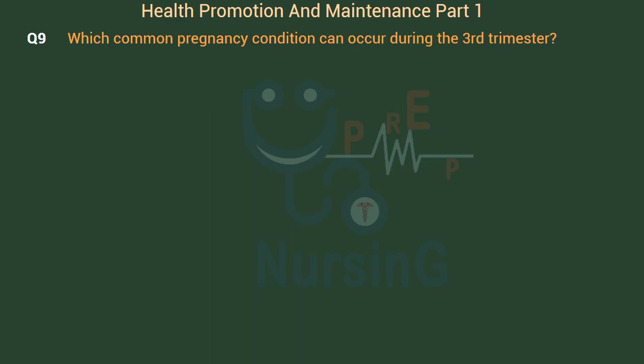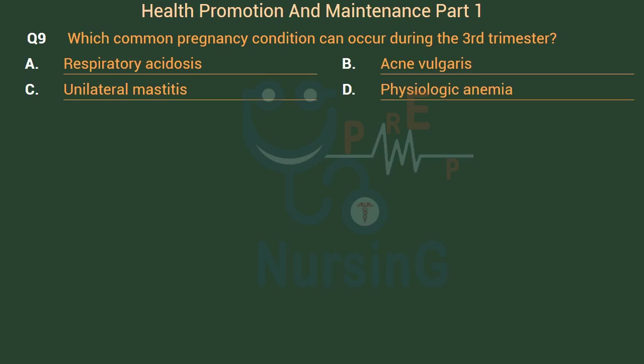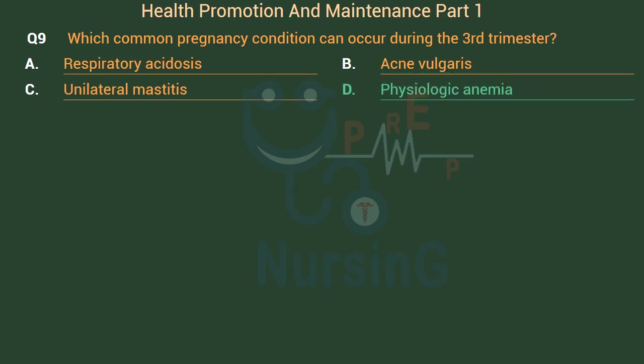Which common pregnancy condition can occur during the third trimester? Option A: Respiratory acidosis. Option B: Acne vulgaris. Option C: Unilateral mastitis. Option D: Physiologic anemia. The right answer is Option D: Physiologic anemia.